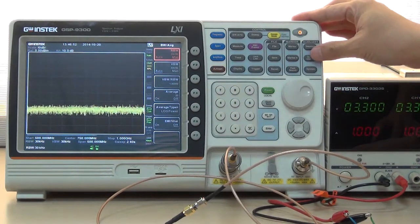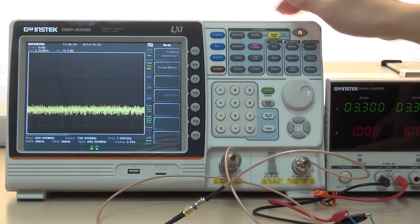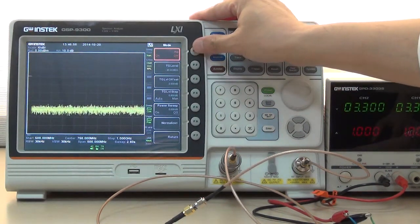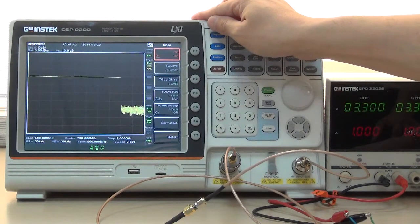Next, press Option Control and F1 Tracking Generator twice to activate Tracking Generator.